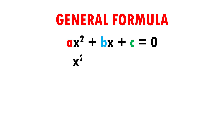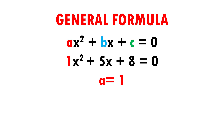Here I have x squared plus 5x plus 8 equals 0. In this case a equals 1. When we have x squared and there is no number written, it is understood that it is 1. Therefore, a equals 1. The letter b equals 5 because it is the number by the x, and the letter c equals 8 because it is the number that stands alone.